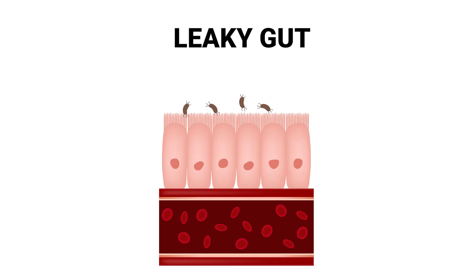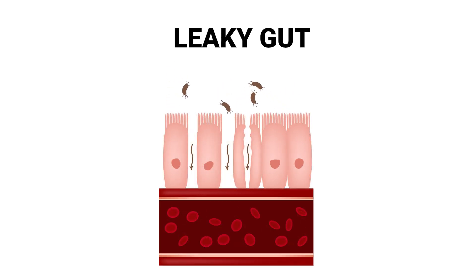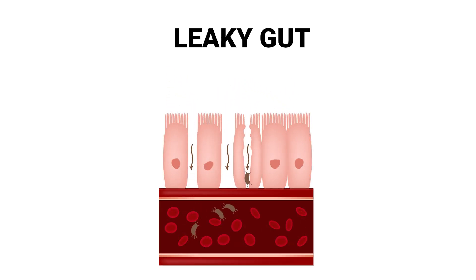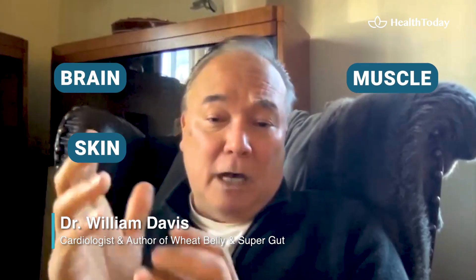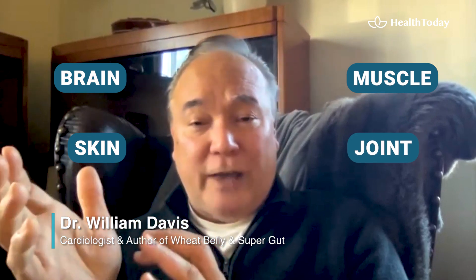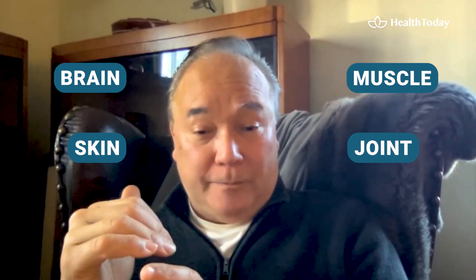What used to be called leaky gut is now called endotoxemia — the entry of endotoxin through the intestinal wall into the bloodstream. That's how you can experience all those brain, skin, muscle, and joint effects from gut microbes.